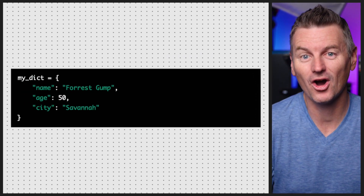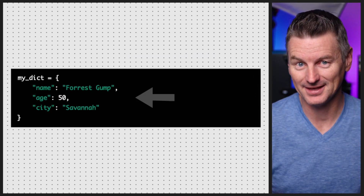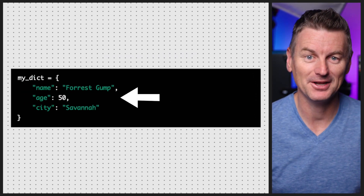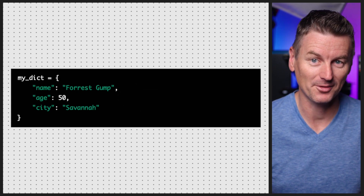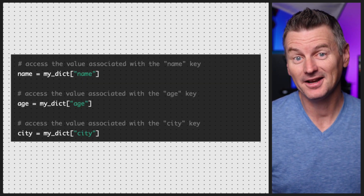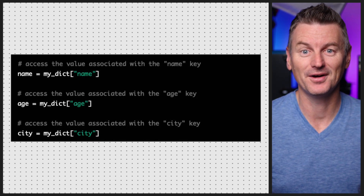Creating dictionaries in Python is super easy. To create a dictionary, you simply enclose a comma-separated list of key-value pairs in curly braces and assign it to a variable.